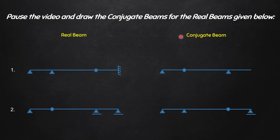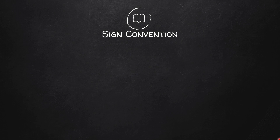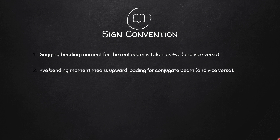Now let's discuss the sign conventions for solving problems using conjugate beam method. There are four sign conventions. First: sagging bending moment for the real beam is positive and hogging bending moment is negative. Second: positive bending moment means upward loading for the conjugate beam and negative bending moment means downward loading for the conjugate beam. The loading of the conjugate beam is the M/EI diagram of the real beam, so a positive M/EI diagram means upward load and negative means downward load.